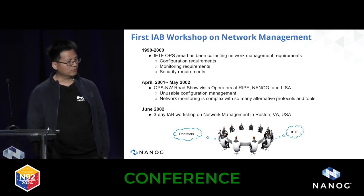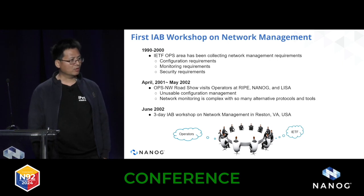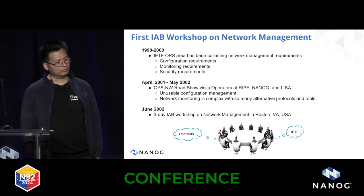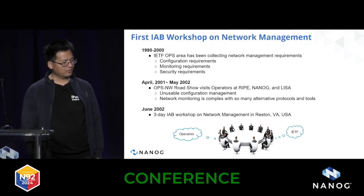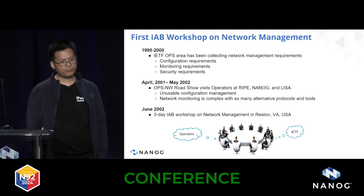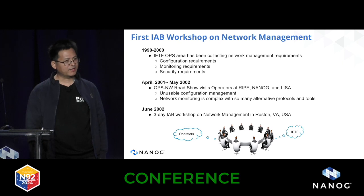There were quite a number of competing management technologies being developed — such as SNMP, which is quite old, and COPS. There was a lot of debate around protocol design: whether to use SOAP over HTTP, whether to use XML as an encoding format, what scalability for SNMP should look like. To really address the challenge, IAB side meetings in various venues were planned and organized around 2001, targeting various operator communities such as RIPE, NANOG, and LISÉ. Some operators at these side meetings expressed that IETF developments did not address their real requirements — for example, lacking concrete configuration management and monitoring being too complex. This led to the first IAB workshop on network management in 2002.